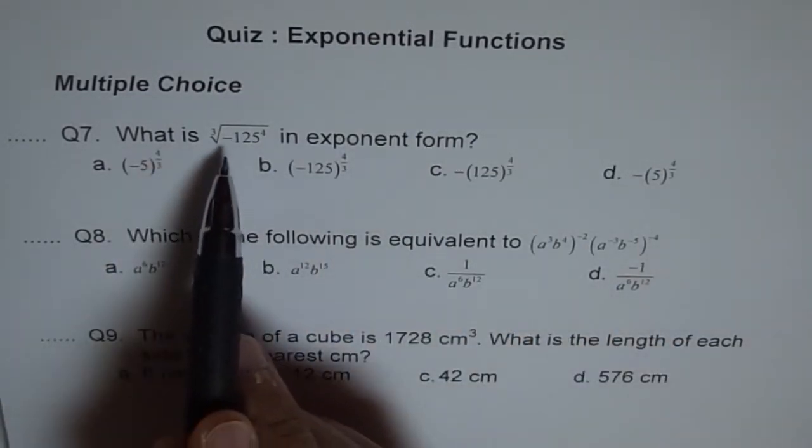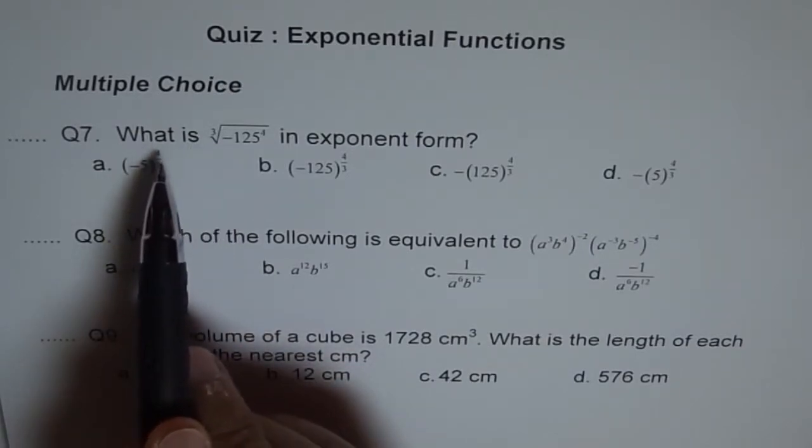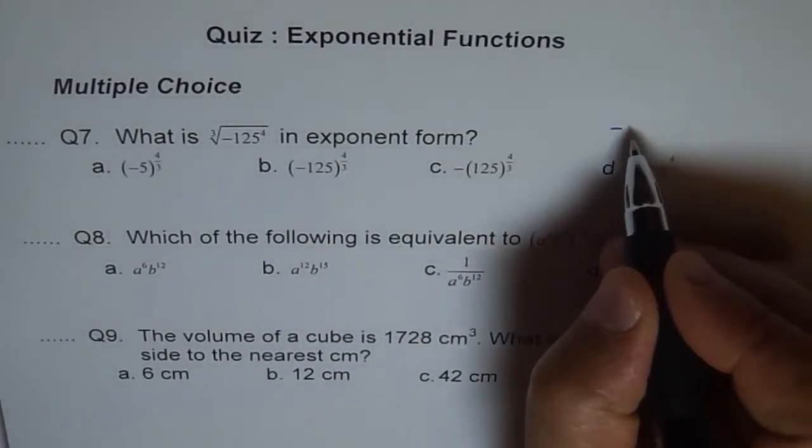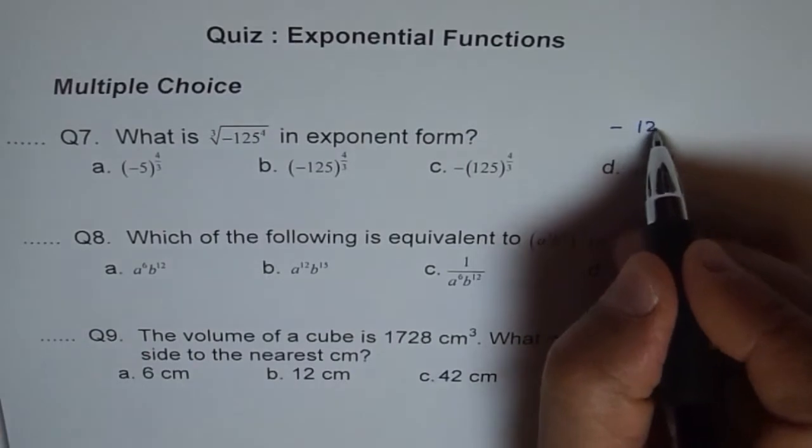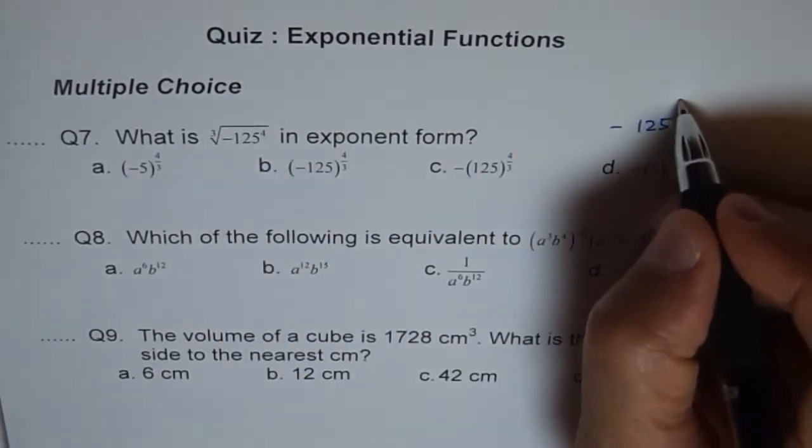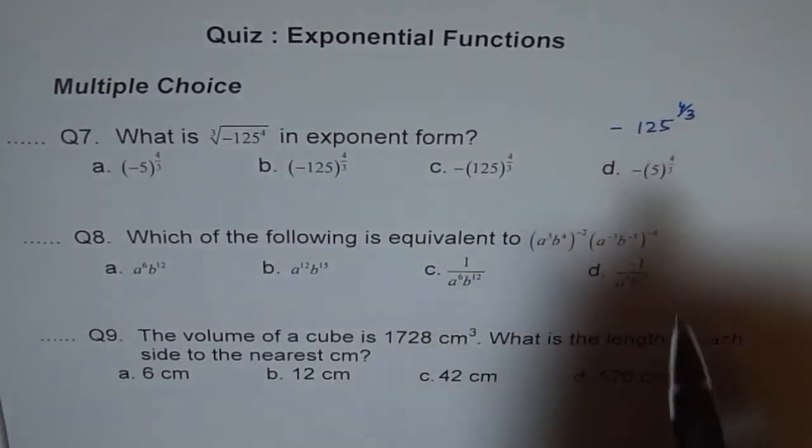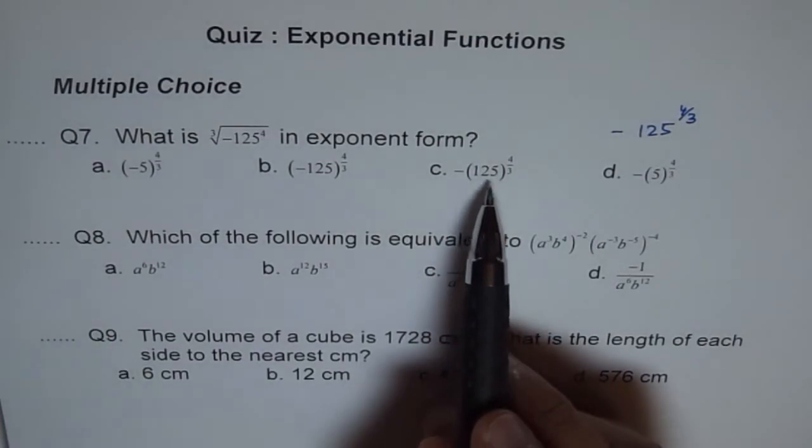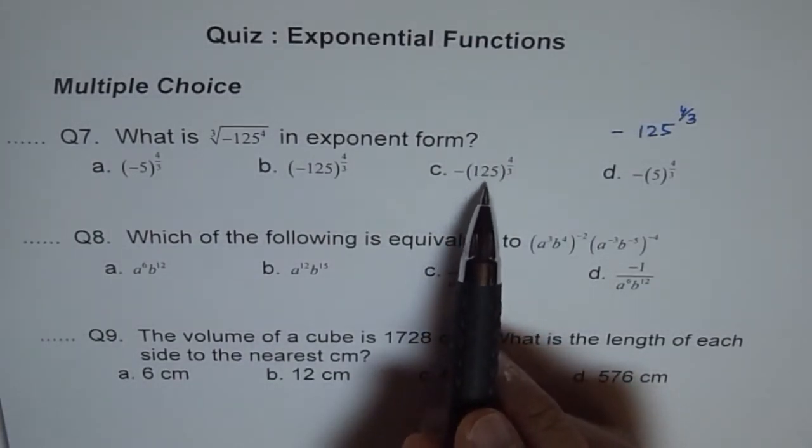This is minus. So minus cube root, this minus will come outside. And therefore we can write this as minus 125 to the power of 4 over 3. So that could be your right answer. Do we have a choice of something like this? There is one which is similar to this. This seems to be the right answer.